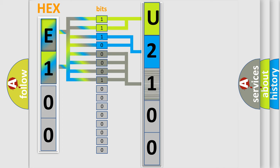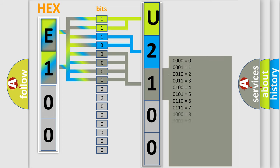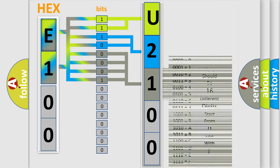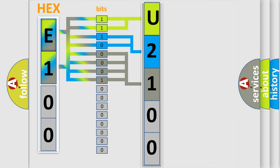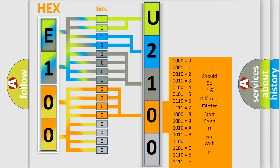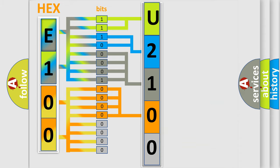The second byte is composed of a combination of eight bits. The first four bits determine the fourth character of the code, and the combination of the last four bits defines the fifth character. A single byte conceals 256 possible combinations.